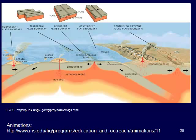Looking at the diagram, we can see transform boundaries where the plates are moving horizontally past each other. There's no creation or destruction of crust. We get lots of earthquakes, but we don't see volcanoes and we don't see new crust being created.